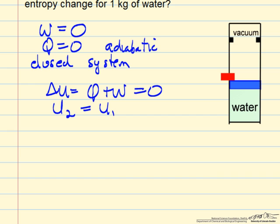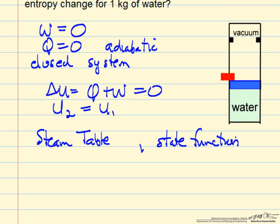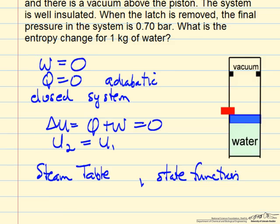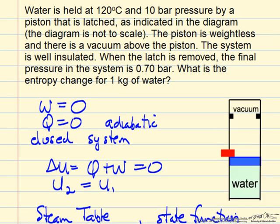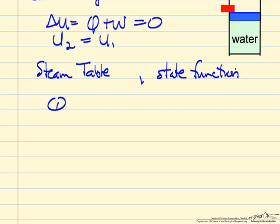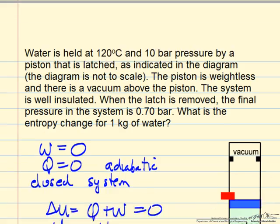Since this is water, we can use the steam tables, and the approach will be taking advantage of the idea of a state function. Namely, we know the initial conditions. We have the pressure at 120 degrees and 10 bar.